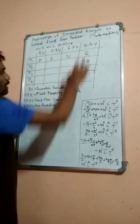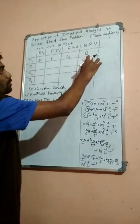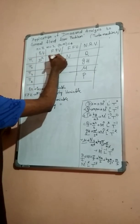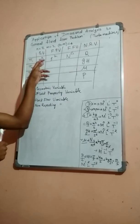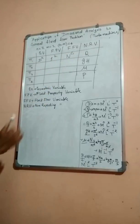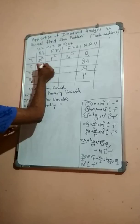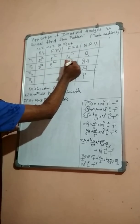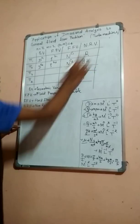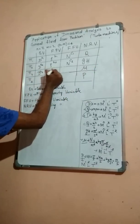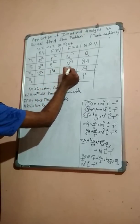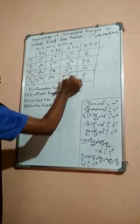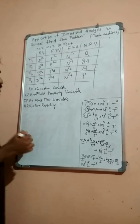After selecting D, rho, and N as repeating variables, we set up four Pi equations. For Pi 1: D raise to A1, rho raise to B1, N raise to C1, times Q. For Pi 2: D raise to A2, rho raise to B2, N raise to C2, times GH. For Pi 3: D raise to A3, rho raise to B3, N raise to C3, times mu. For Pi 4: D raise to A4, rho raise to B4, N raise to C4, times P. Please construct this table and then we will solve it.